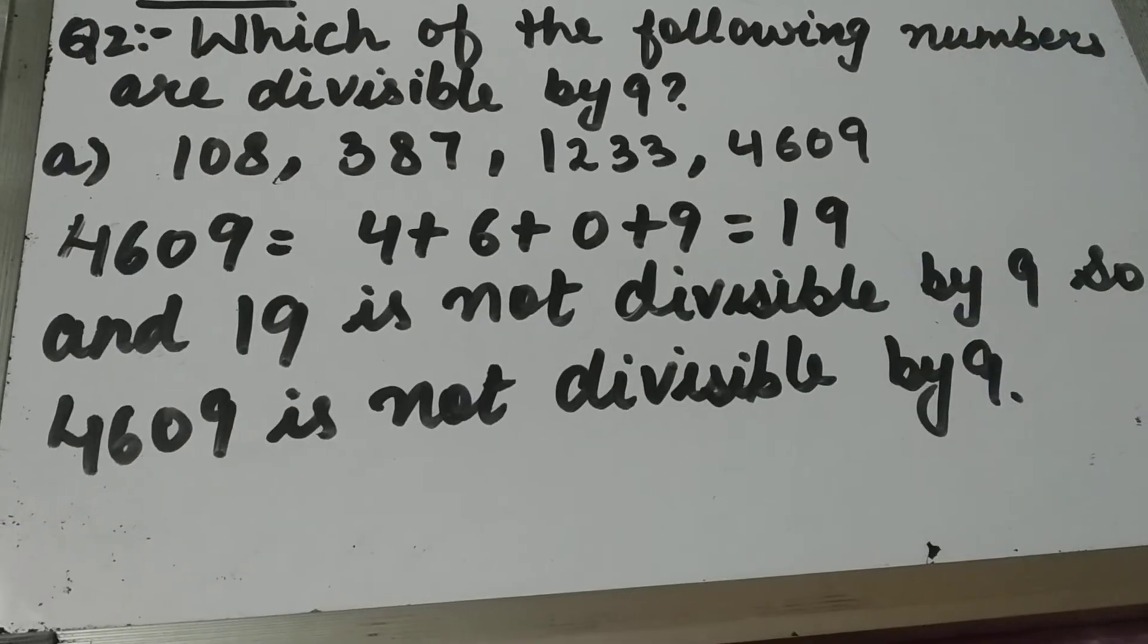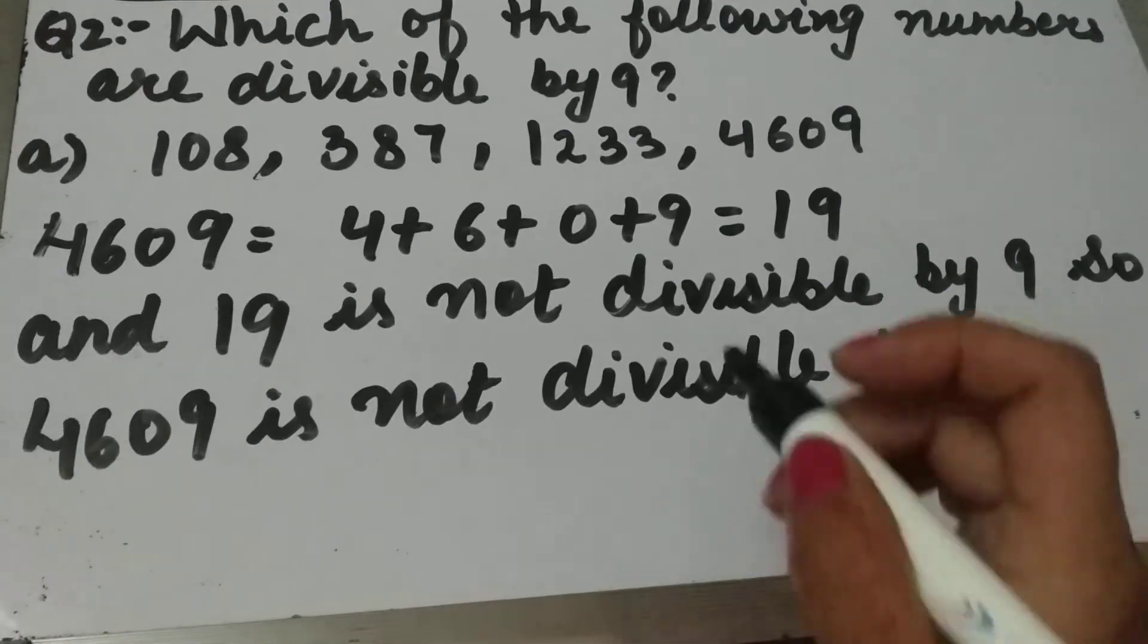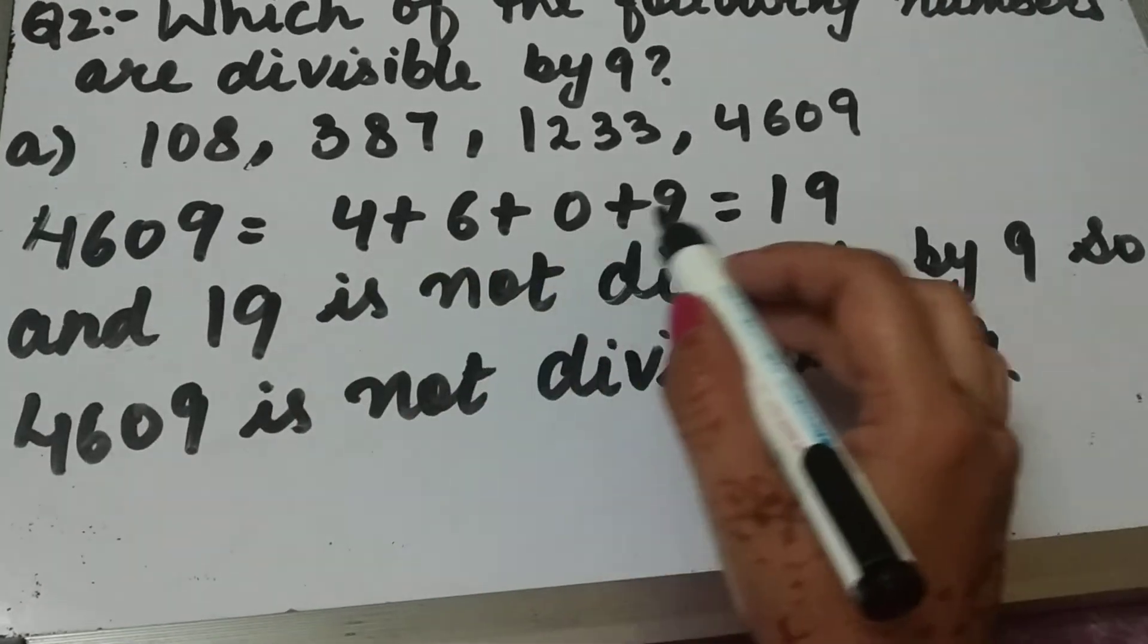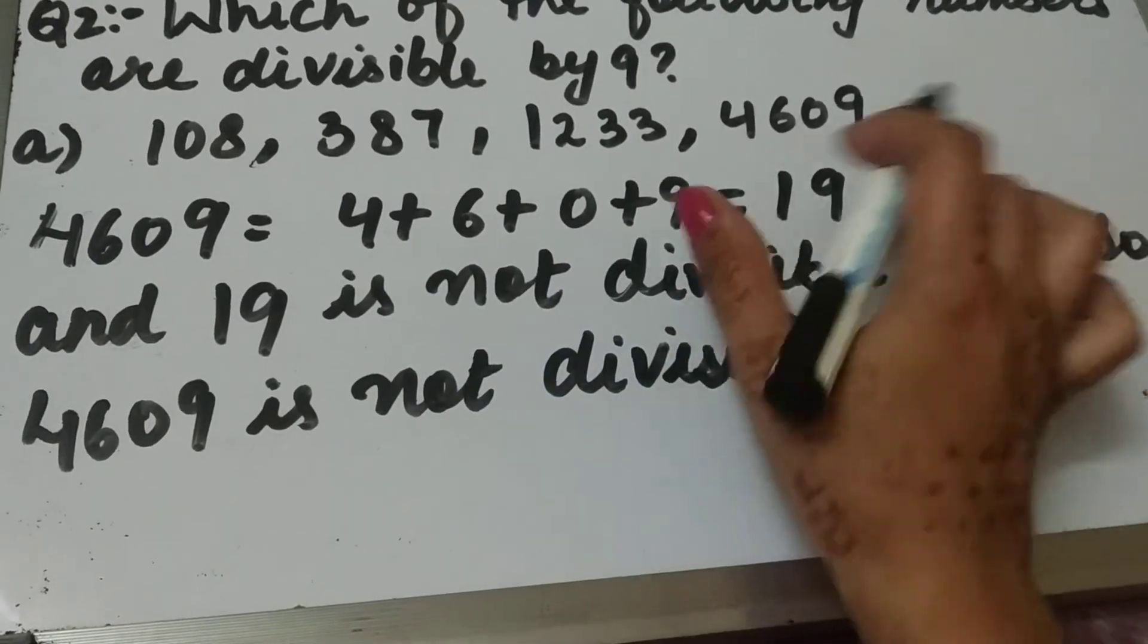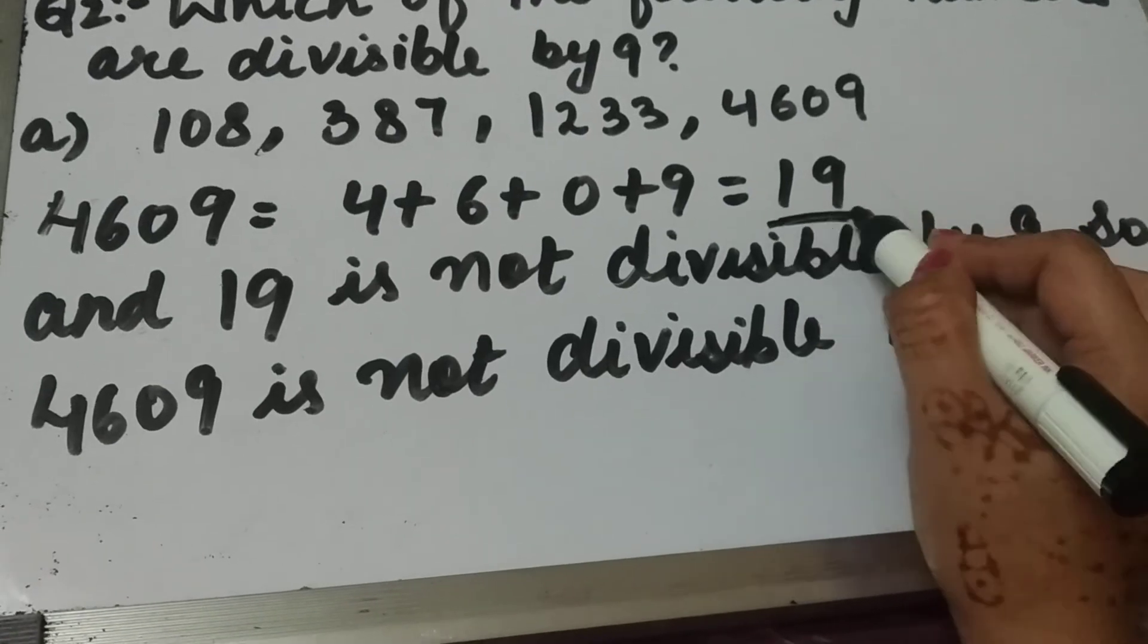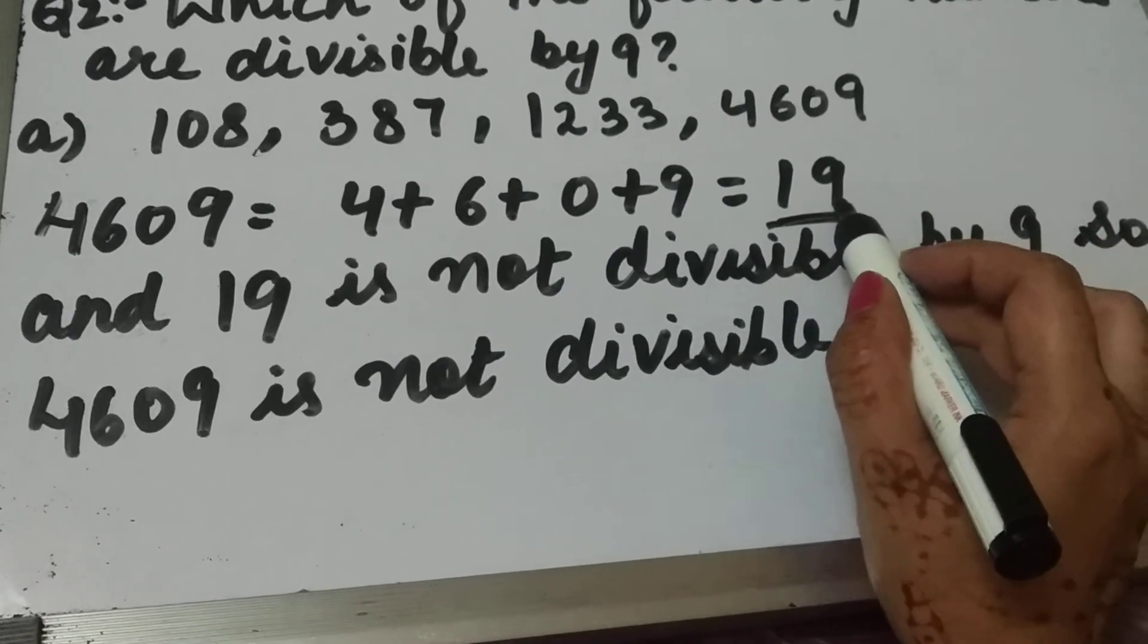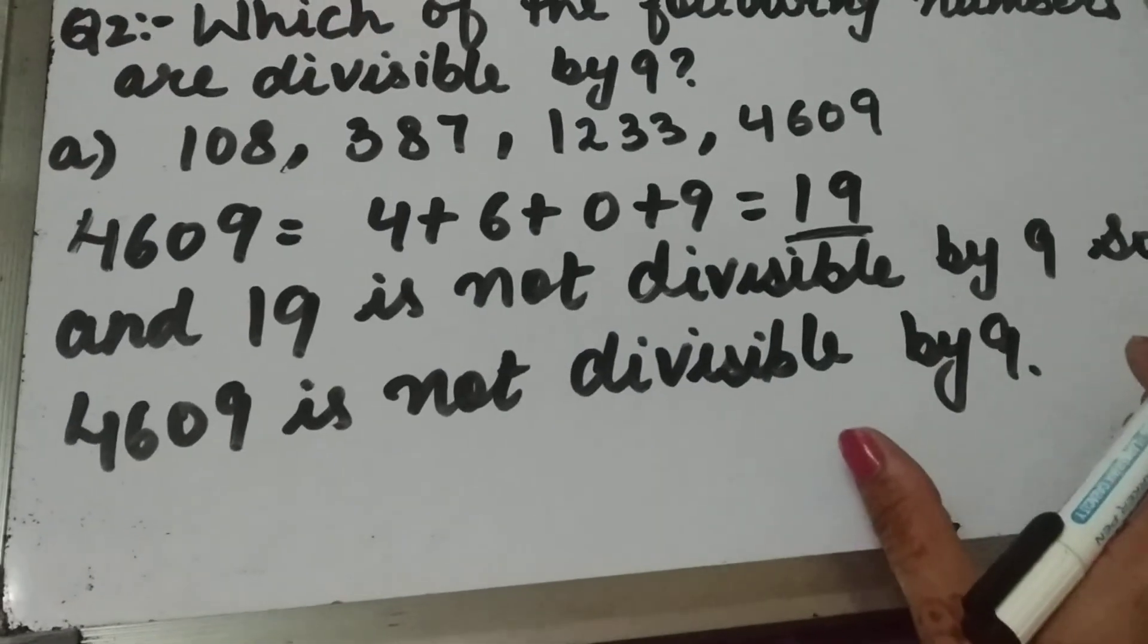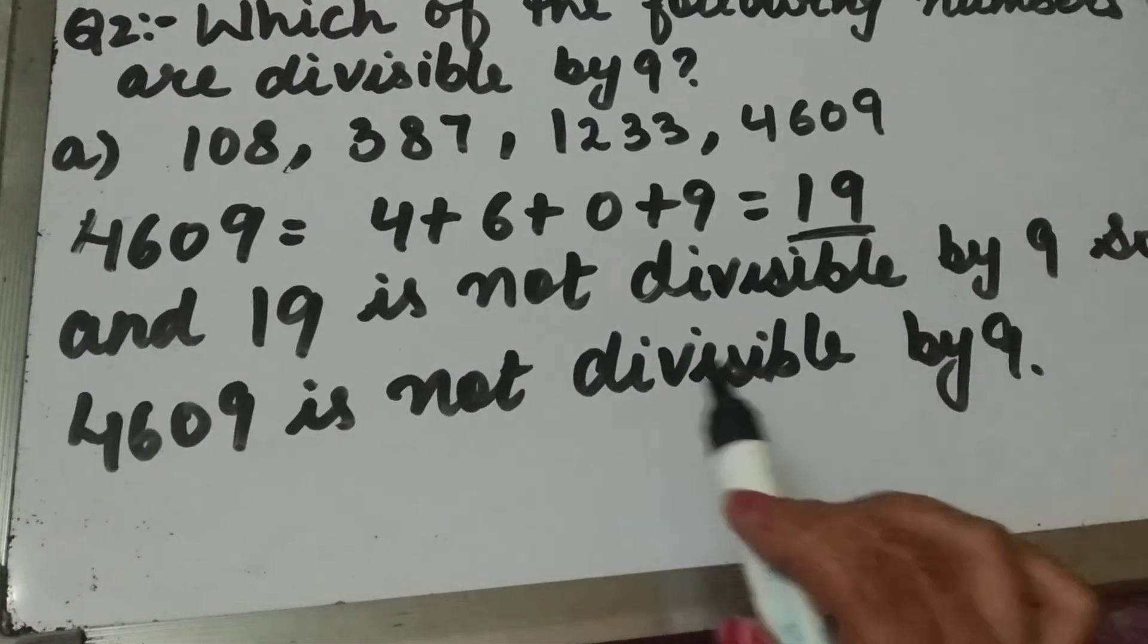Now let's check the fourth part: 4609. After adding the digits, we get 19, and 19 is not divisible by 9. Therefore, 4609 is not divisible by 9.